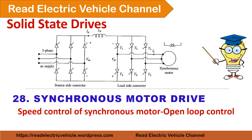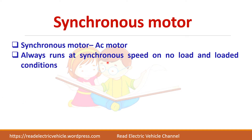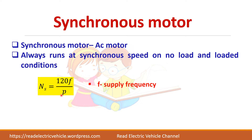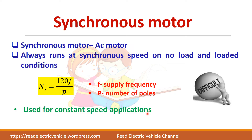In this video, we are going to see about synchronous motor drive. A synchronous motor is an AC motor which will always run at synchronous speed. The synchronous speed is given by 120F by P, where F is the supply frequency and P is the number of poles. Since P is fixed, we have to change the supply frequency to vary speed, which is difficult. So normally synchronous motors were used for constant speed applications, but due to improvements in power electronic converters, nowadays synchronous motors are preferred for variable speed applications also.